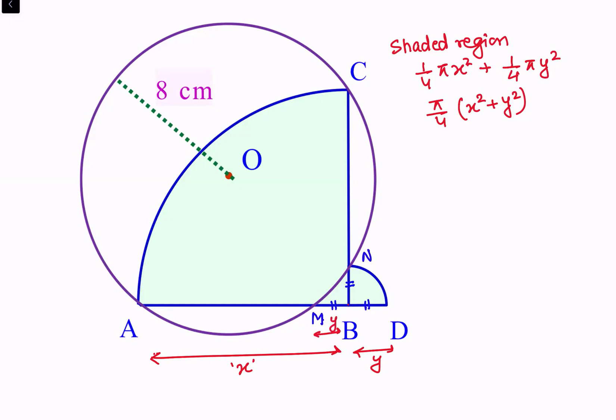Let's join AC. It's a quadrant, so AB equals BC. Triangle ABC is an isosceles triangle. One angle is 90 degrees, so the other angles are 45 degrees each.